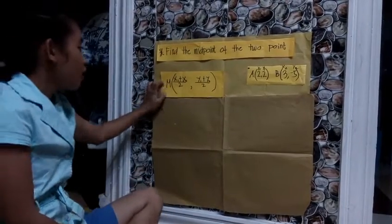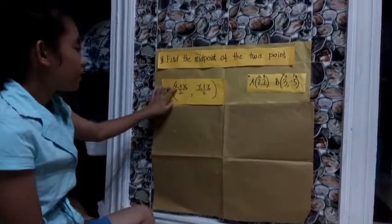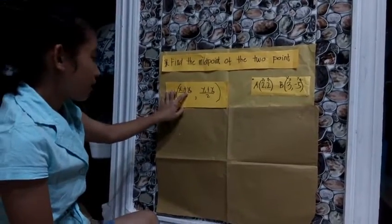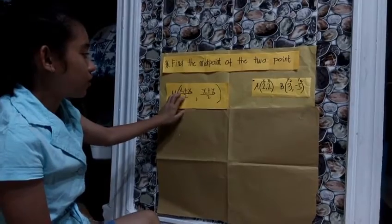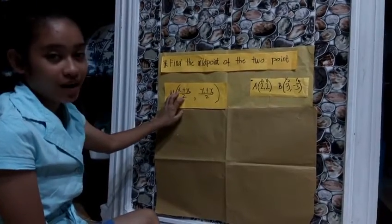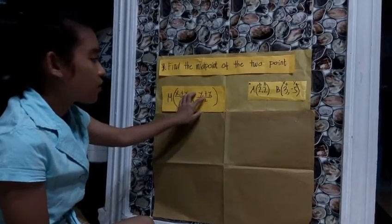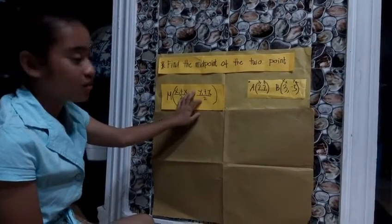This is the midpoint formula: M equals (x₁ plus x₂) divided by 2, and (y₁ plus y₂) divided by 2.